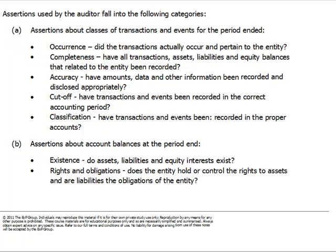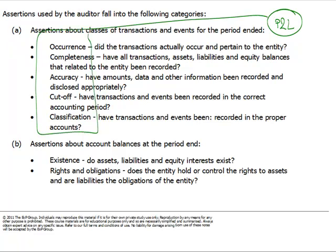For the P&L items, the following assertions need to be considered: Did the transaction occur during the period? Was it completely recorded — are all revenue transactions included, or are there contracts hidden in somebody's drawer that have not been recorded? Were they accounted for accurately, without errors such as transposition errors? Were they recorded in the proper period? And finally, were they properly classified — is this revenue or other operating income? These are the assertions about P&L.